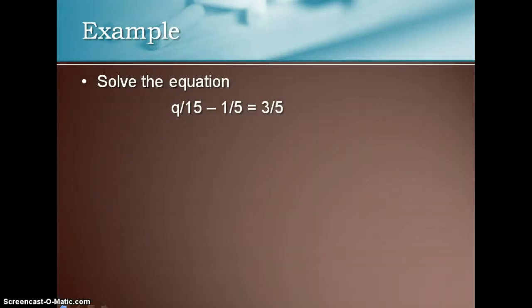So the example is q divided by 15 minus 1 fifth is equal to 3 fifths. So I'm going to rewrite that. So q divided by 15 minus 1 fifth is equal to 3 fifths.